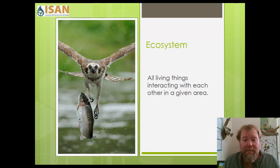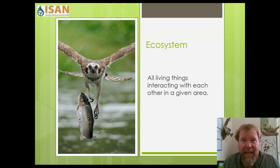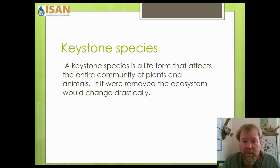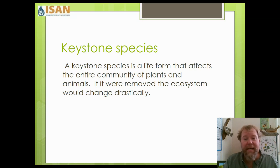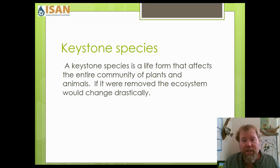An ecosystem is where all living things are interacting with each other within a given area. A keystone species is a life form or organism that affects the entire community of plants and animals, and if it were to be removed, the ecosystem would change dramatically.